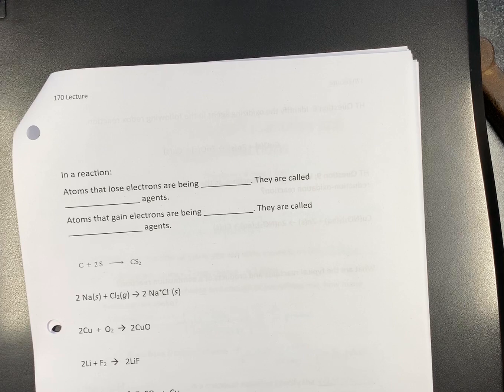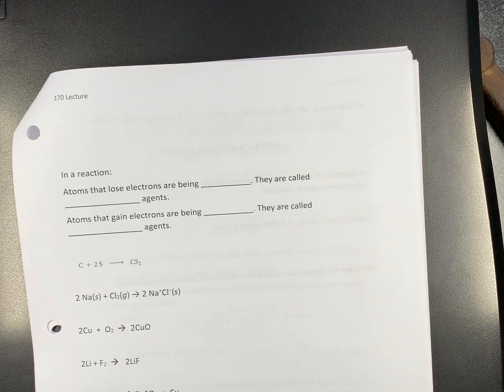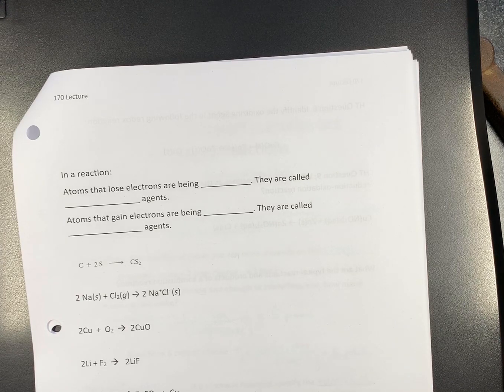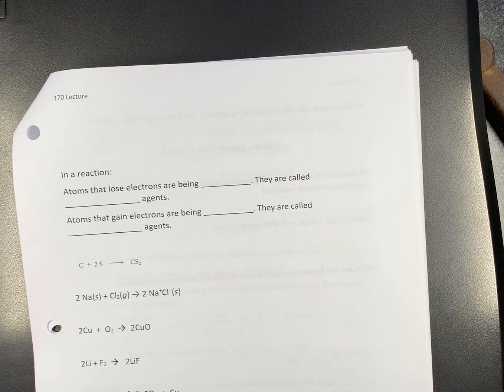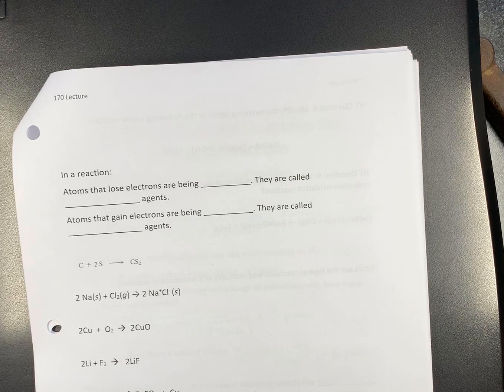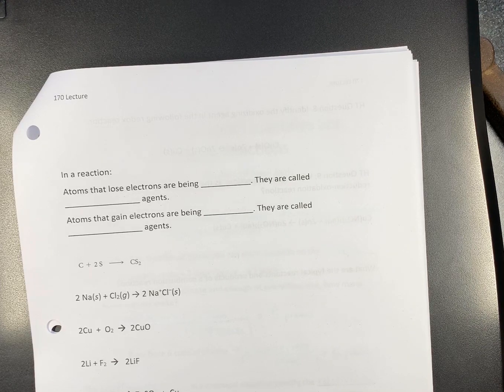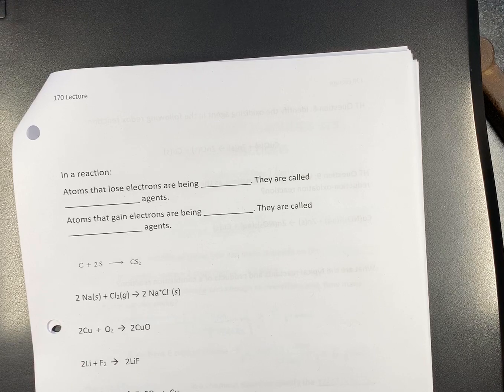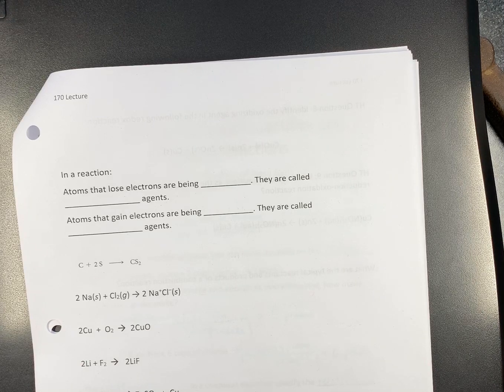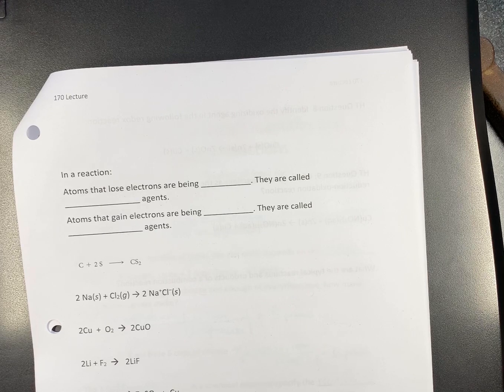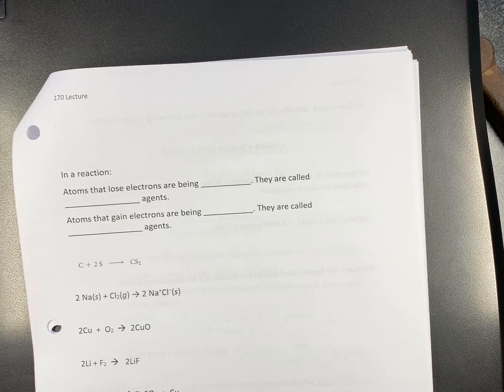So the rules were: free elements are zero. If you have an ion that is composed of only one atom, its oxidation number is its charge. If you have a neutral compound, they all add up to zero. If you have an ion, they all add up to the charge.